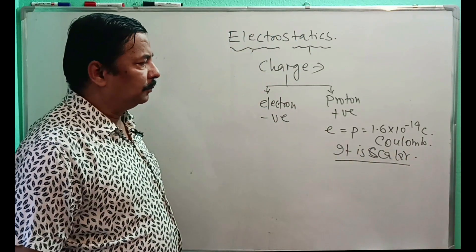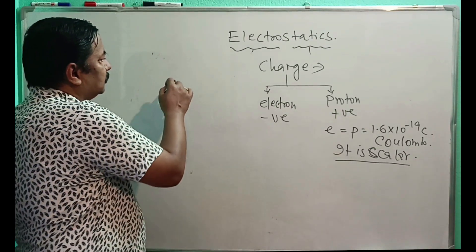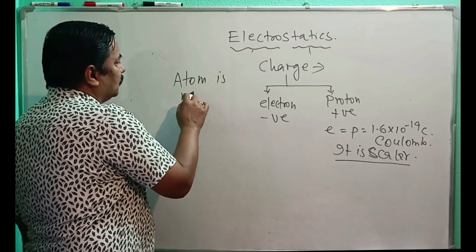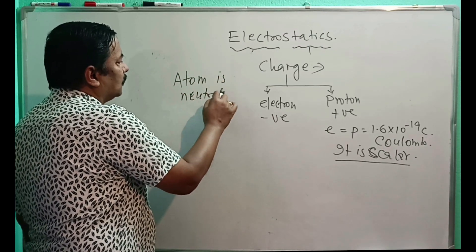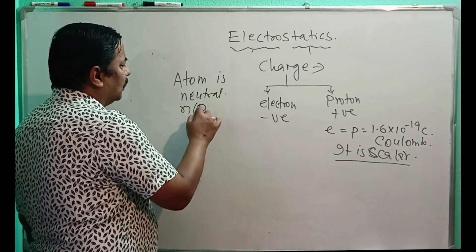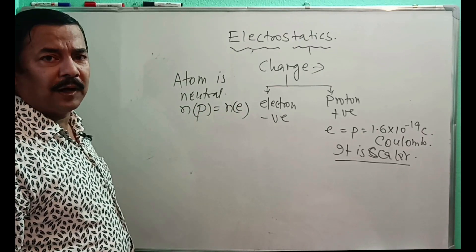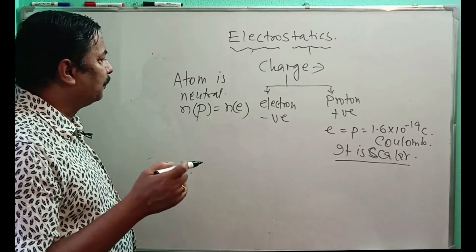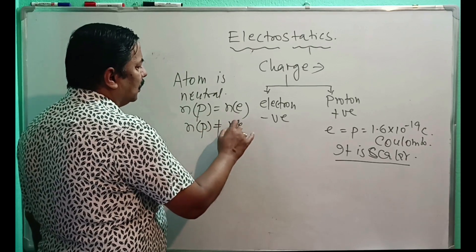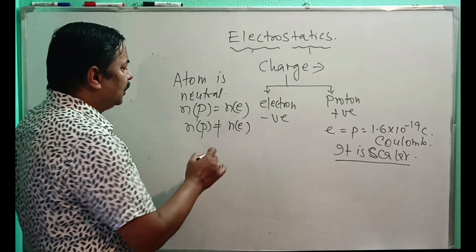Charge is a scalar quantity. The atom on the whole is neutral, which means that the number of protons is equal to the number of electrons, so the net charge is zero. Whenever the number of protons is not equal to the number of electrons, charge develops.